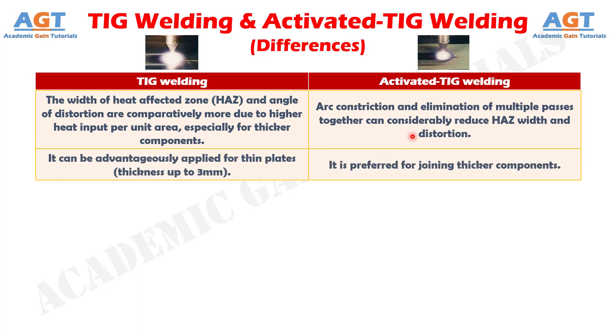Number 7: TIG welding can be advantageously applied for thin plates to a thickness up to 3 mm, whereas activated TIG welding is preferred for joining thicker components.